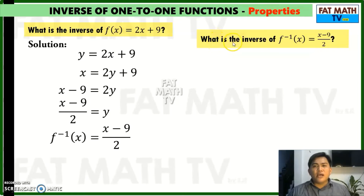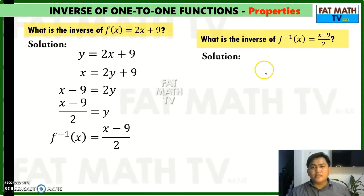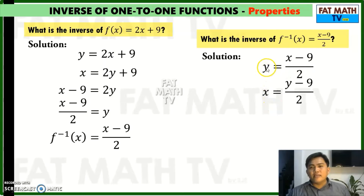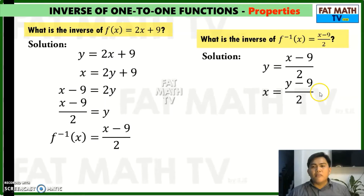But what if you are asked to find the inverse of the inverse of f? So f inverse of x is equal to x minus 9 over 2 as solved here. To find its inverse, first write this in the form y equals f of x, so y equals x minus 9 over 2. Then interchange x and y — make this y into x and this x into y. So we will have x equals y minus 9 over 2. Then solve for y. Since we are solving for y, we will multiply both sides by 2.